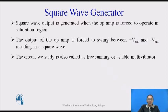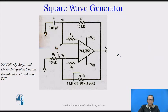The circuit we are going to discuss is a square wave generator, also called a free-running or astable multivibrator, because it has two states: one state when the output of the op-amp is in plus-Vsat, and the other when it is in minus-Vsat. The transition between these two states takes place without any external input. A very simple circuit here can be designed using an operational amplifier.